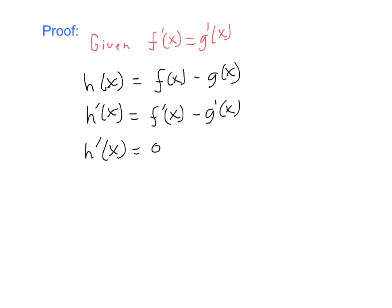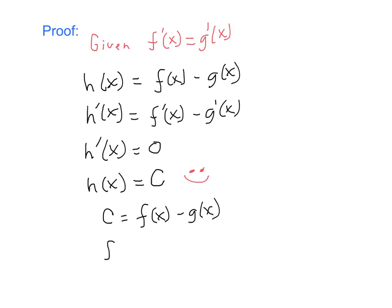Since the derivative of h is zero, h must be a constant function — let's call that constant C. Since h(x) = f(x) - g(x), we write C = f(x) - g(x), and solving for f(x) gives us f(x) = g(x) + C. That's exactly what we were trying to prove.